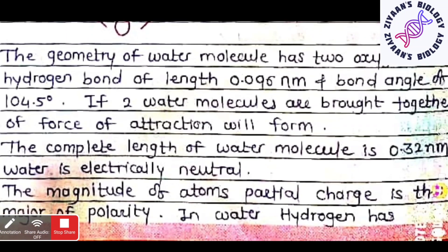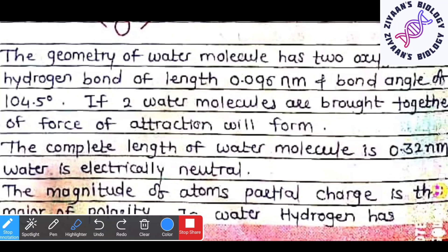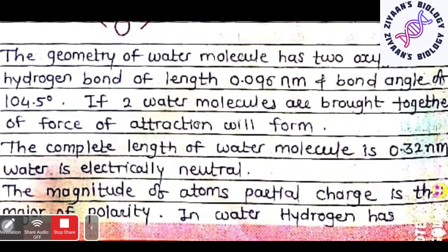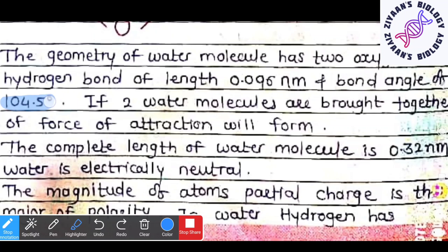The geometry of the water molecule has two oxygen-hydrogen bonds with a length of 0.096 nanometers. The bond angle between the oxygen and the hydrogen is 104.5 degrees. When two water molecules are brought together, a force of attraction forms and they develop a hydrogen bond. The total length of the water molecule is 0.32 nanometers.